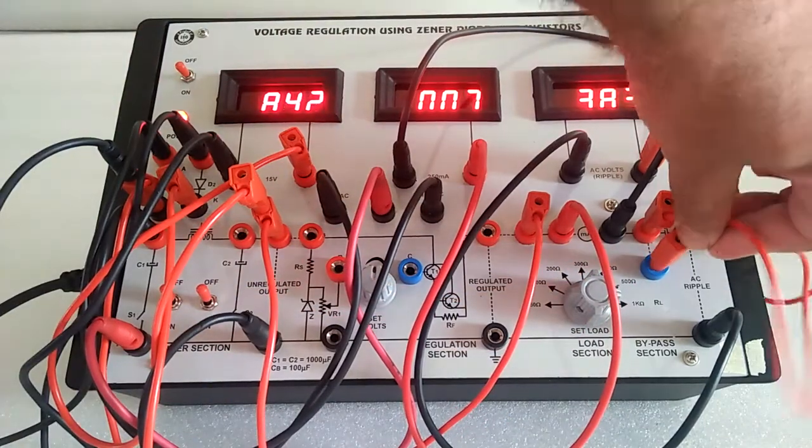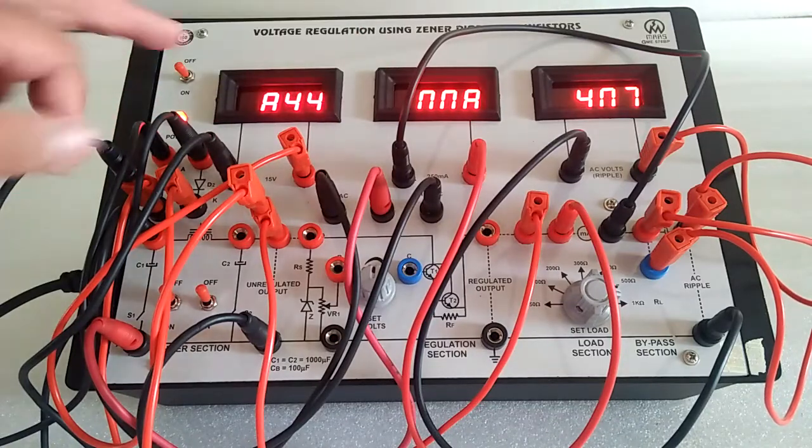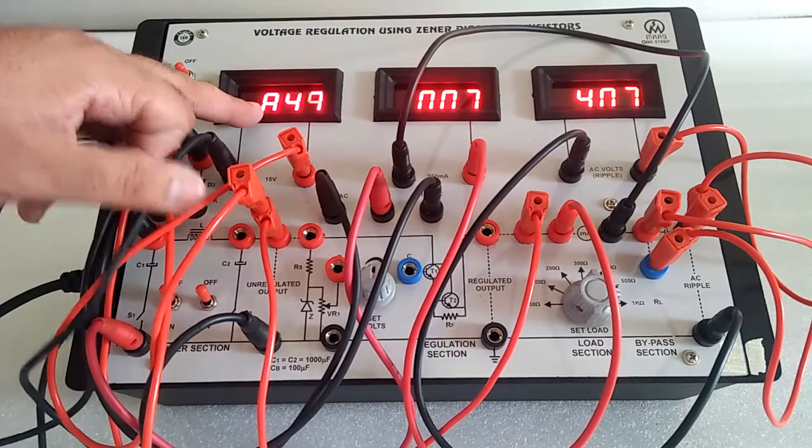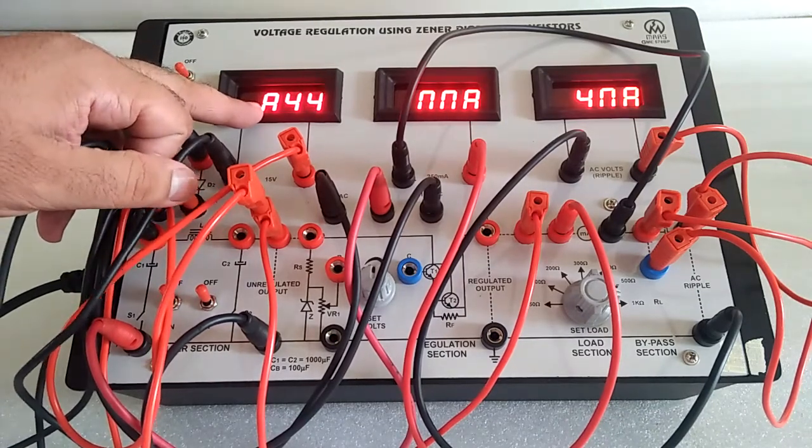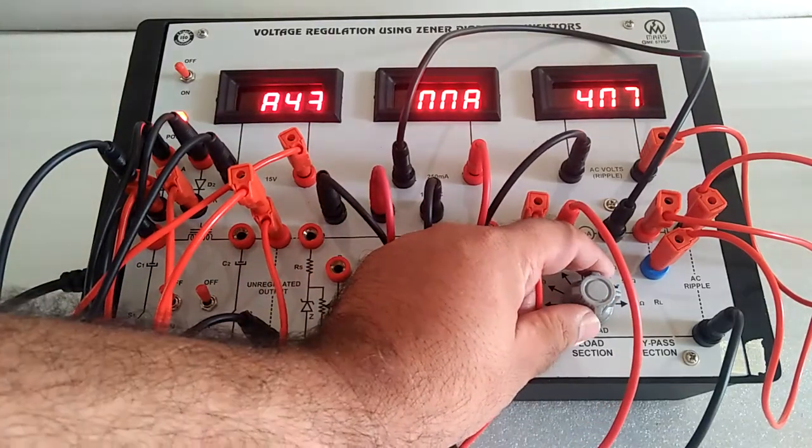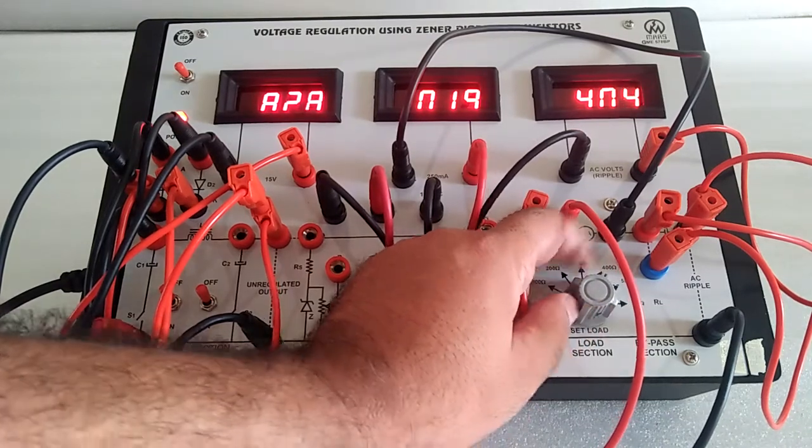As we add the load of 1 kilo-ohm, voltage will drop and current will rise. You can see the voltage drop with the unregulated supply. Now as we increase the load, voltage drops in very fast steps.